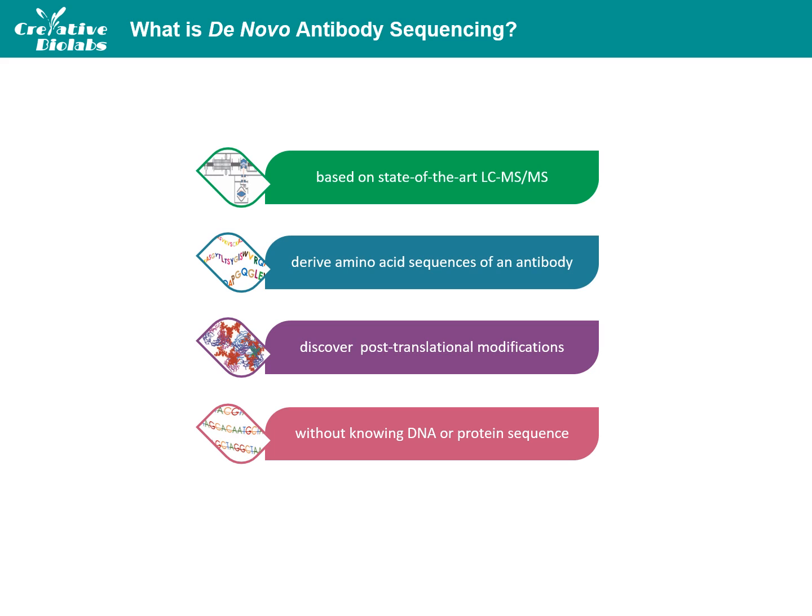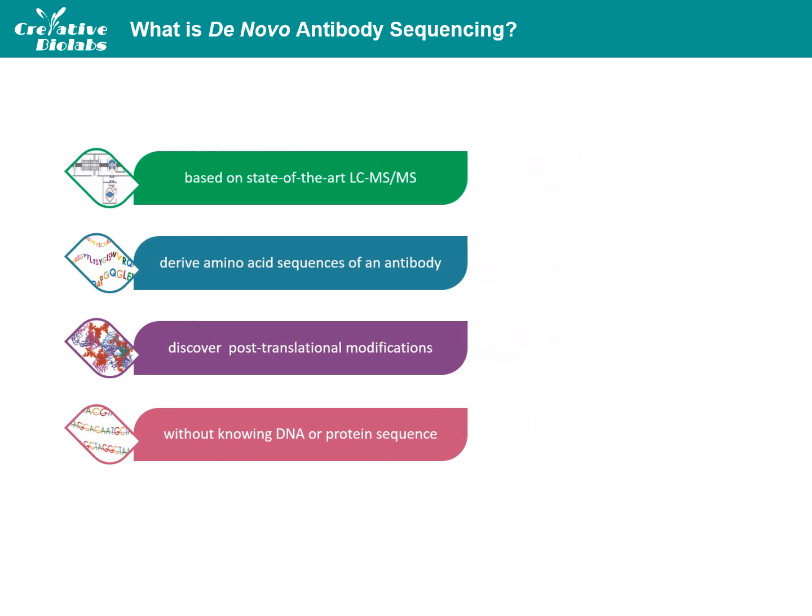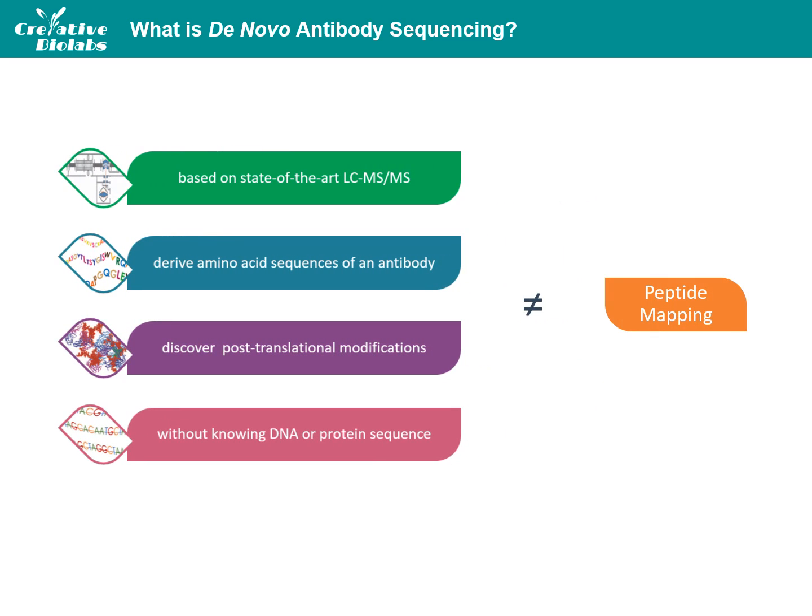without knowing the DNA or protein sequence. This differs from sequence confirmation by peptide mapping, in which the protein sequence is already known and is used as a guideline to confirm the sequence. DeNovo Antibody Sequencing is a valuable tool for enabling recombinant production of a commercial antibody with useful properties, and is frequently faster than raising new antibodies from immunized sources.